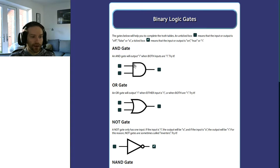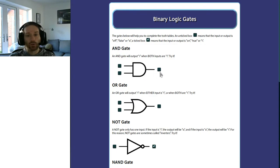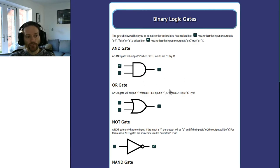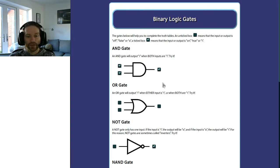The AND gate: the symbol has a flat line at the back and it looks like a sideways cup. The output of an AND gate will only be on if both of the inputs are on. So at the moment they're both off — the output is off. If I turn one of them on the output is still off. If I turn the other one on the output is still off. But if I turn them both on, the output is now on.